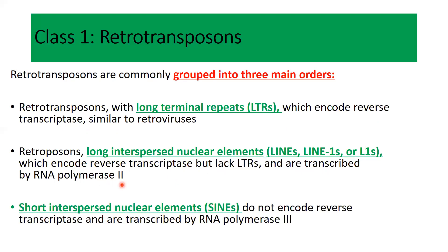The third subclass is short interspersed nuclear elements, or SINEs, which do not encode reverse transcriptase and are transcribed by RNA polymerase III.